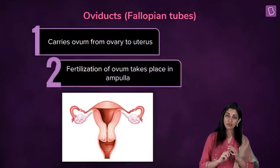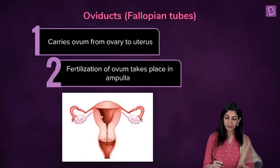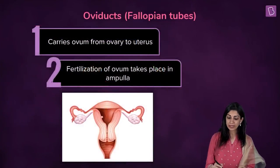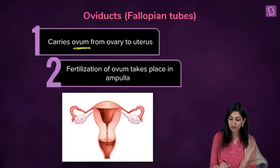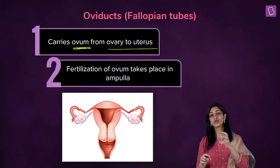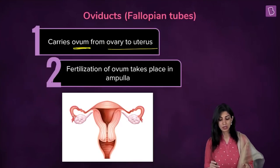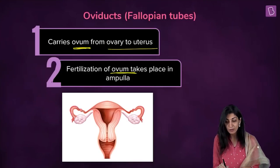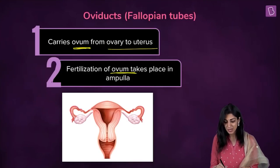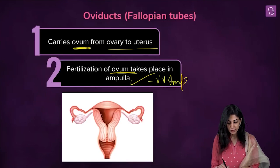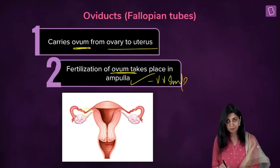What do oviducts do? They carry the ovum from the ovary to the uterus — that is why they are called tubes or ducts, they are hollow tubes. Fertilization of the ovum occurs here. Look at the egg traveling through the narrow isthmus, and finally the destination is the uterus.